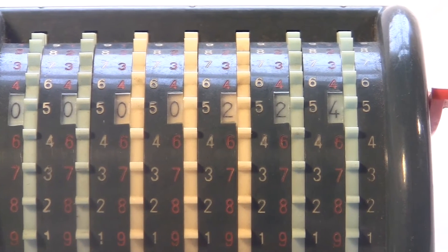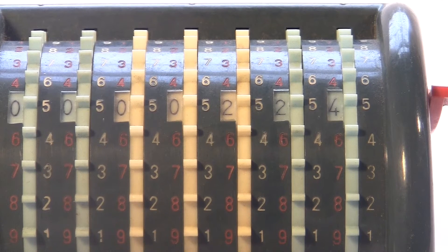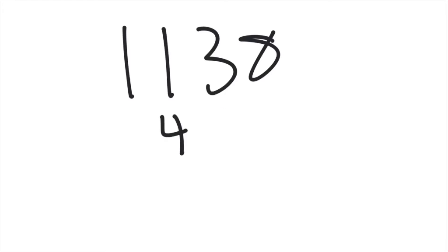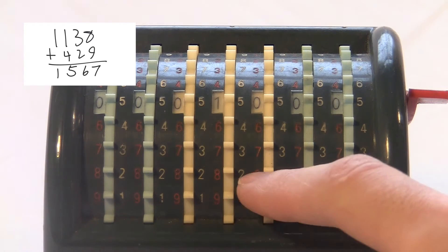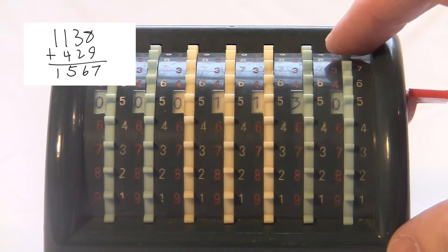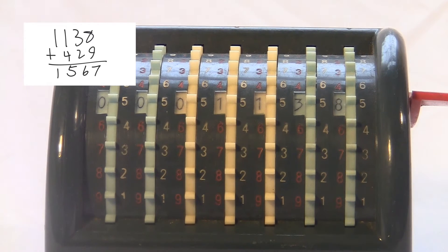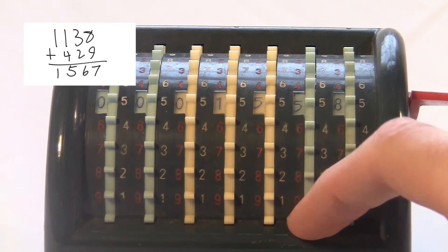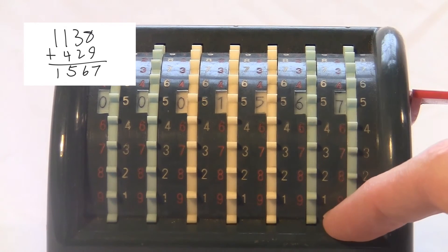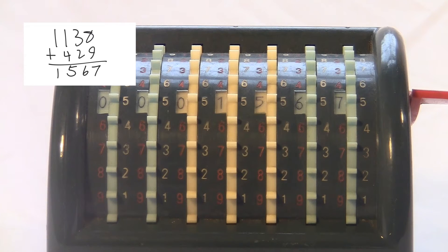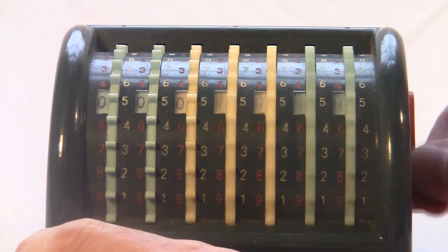If you want to add a number, you just find a white number in the digits you want and push the wheel down to the bottom. Like 1138 plus 429 is just 1138, and then 429. You can dial in the digits in any order you want since the carries are all done for you. The button on the side will reset it to zero, so you can do another one.